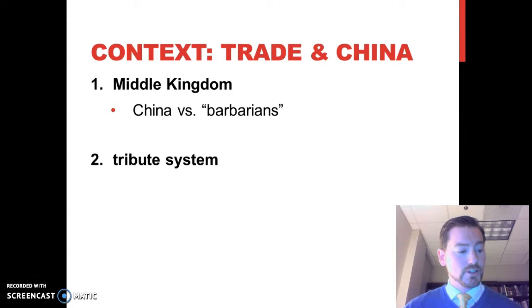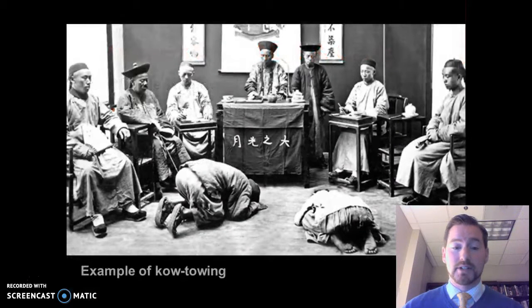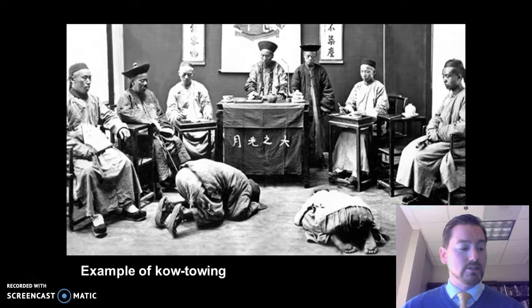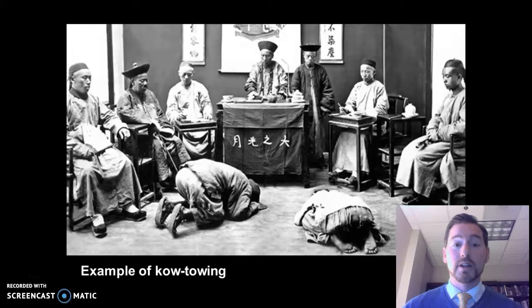You have to understand the tribute system and just what that entailed. In order to trade with China, countries had to follow a certain series of steps. They needed to send an official delegation to the imperial court. They had to kowtow — bowing all the way down to the ground. They had to present their tribute, which, ideally, to show respect, would be something of great value from that country. In return, the Chinese emperor would graciously accept their gift and give the trading country items far more valuable than what they had given him. This was to display his superiority, dominance, and generosity — to give them such valuable things in exchange. China had been doing this for centuries.